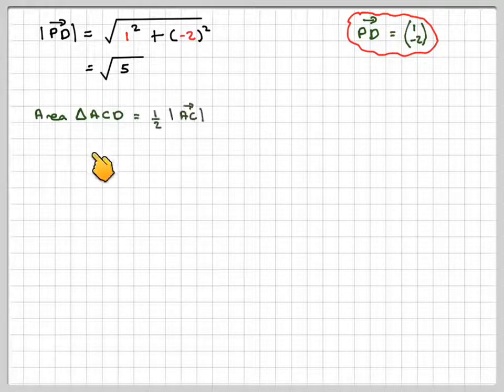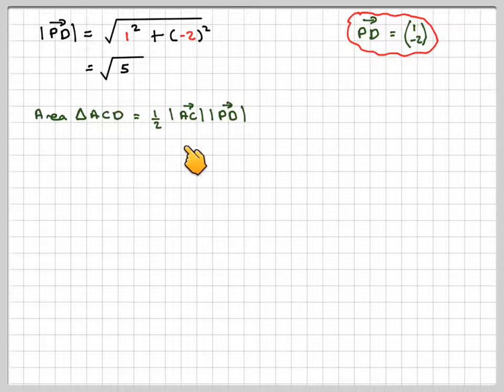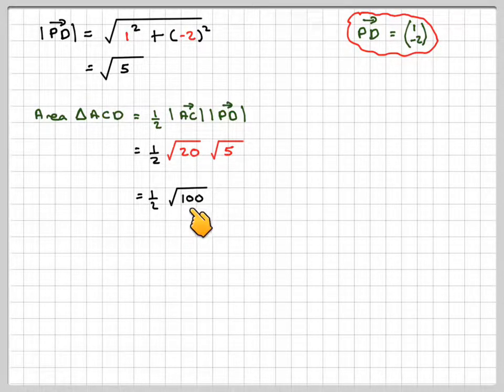And then the area of triangle ACD is ½ of the magnitude of AC times PD. There's going to be ½ times the square root of 20 that we just found for magnitude of AC times the square root of 5. Square root of 20 times the square root of 5 gives me the square root of 100. The square root of 100 is 10. And half of 10 gives the final answer of 5 square units.